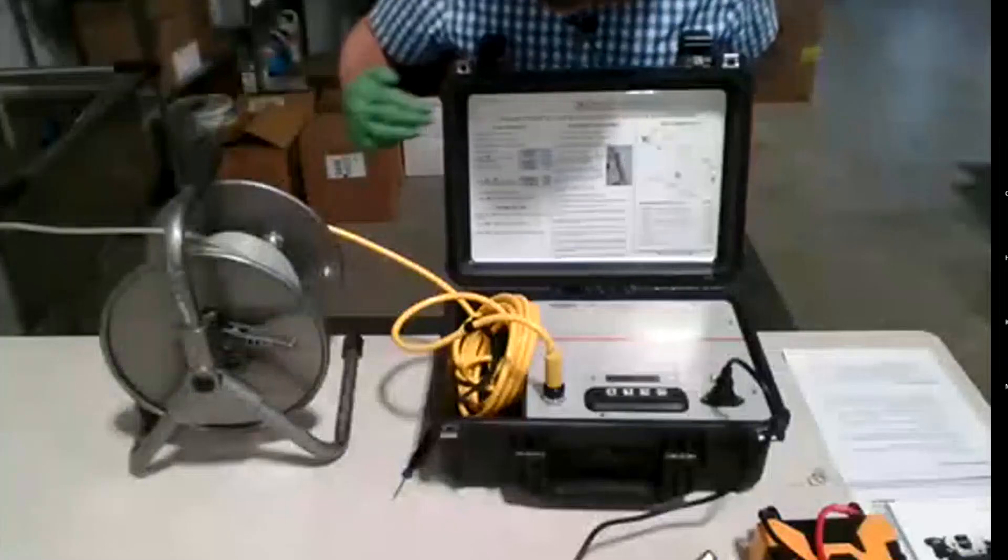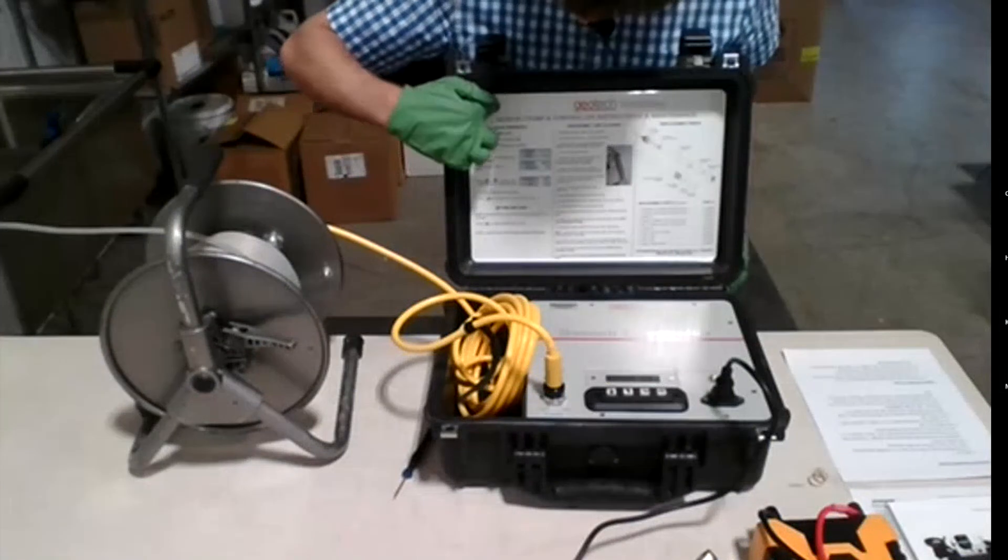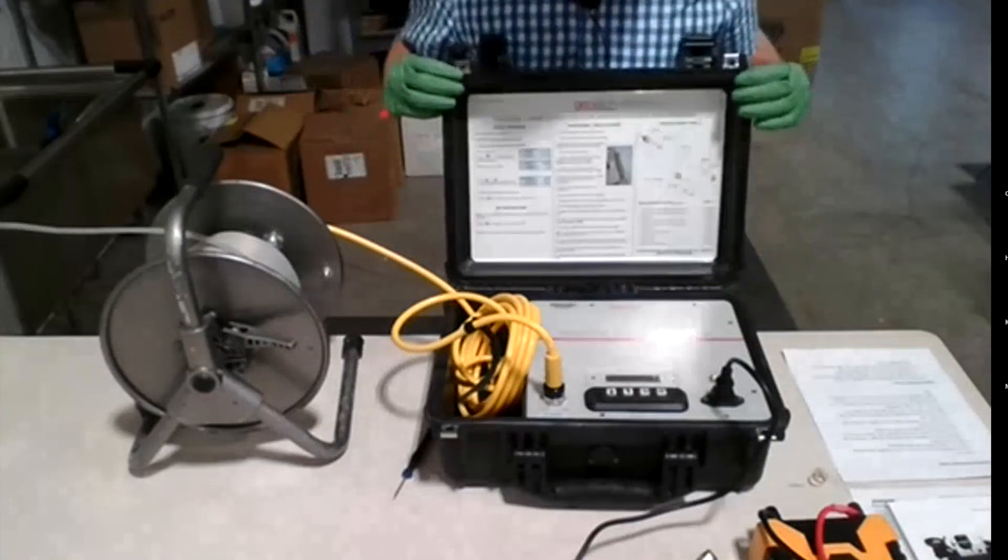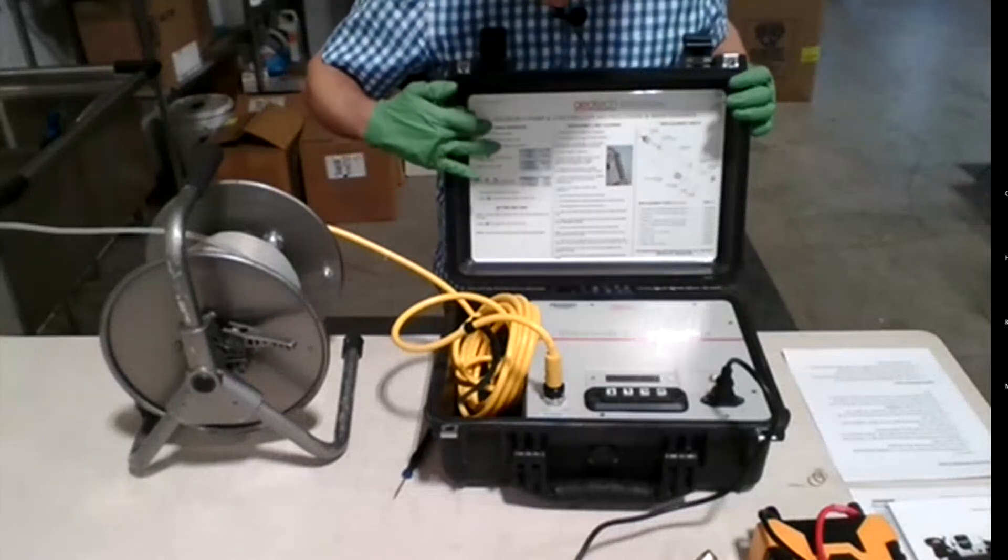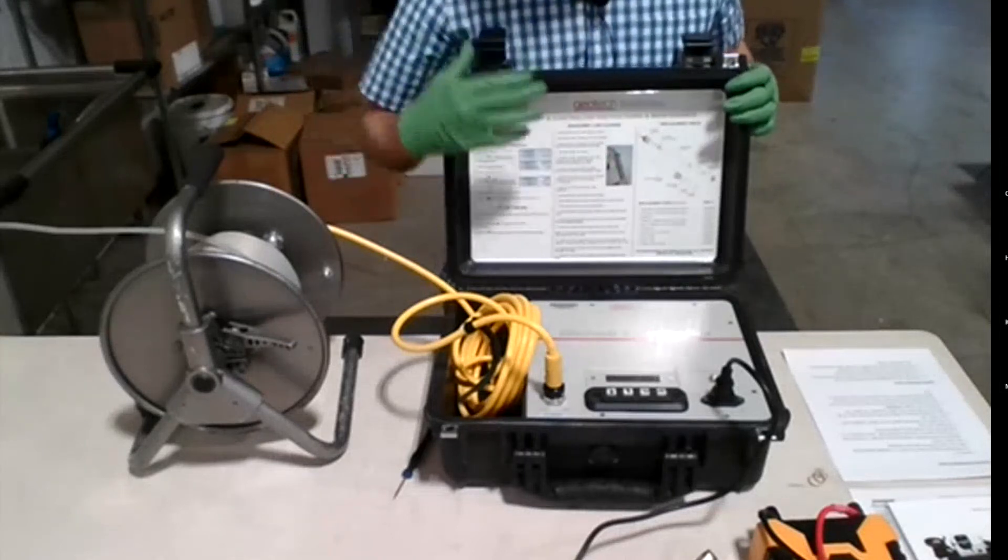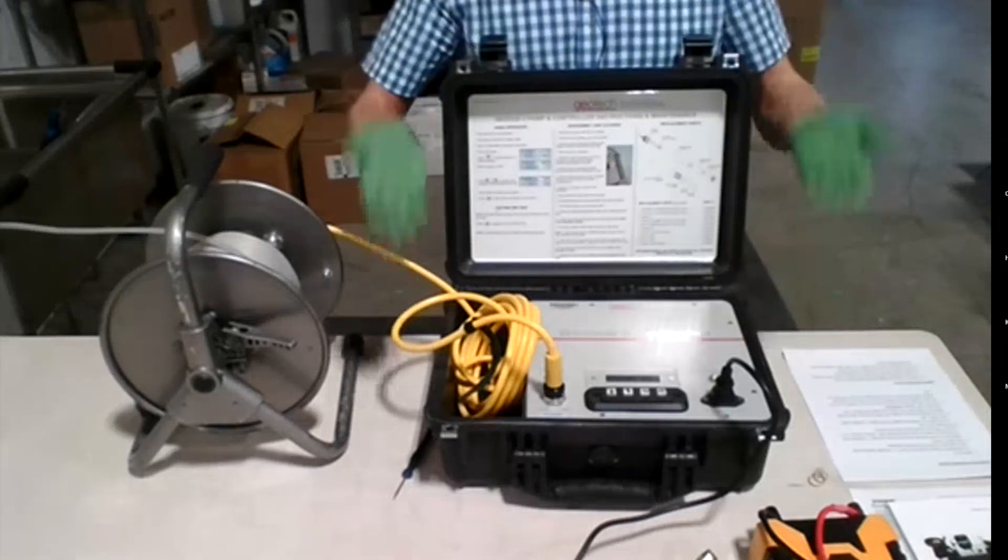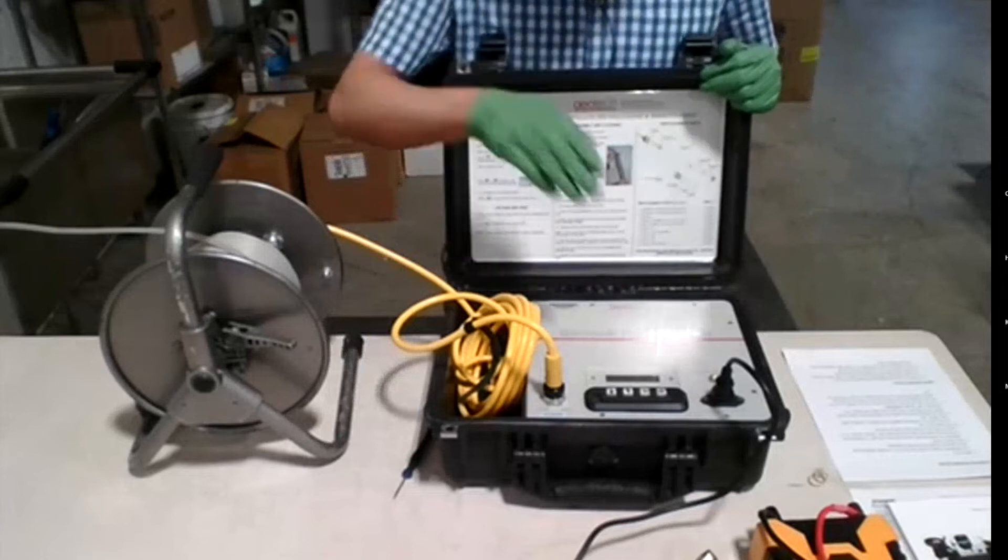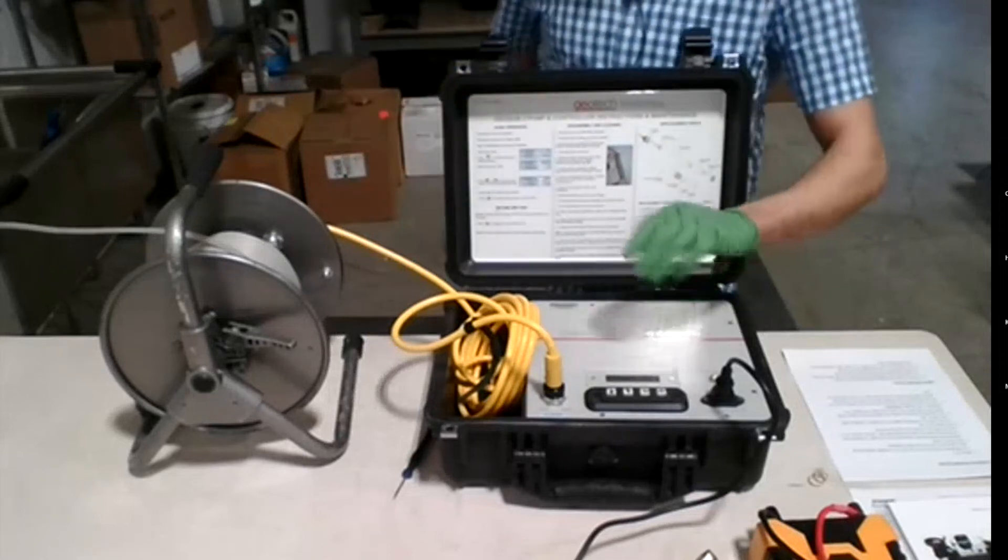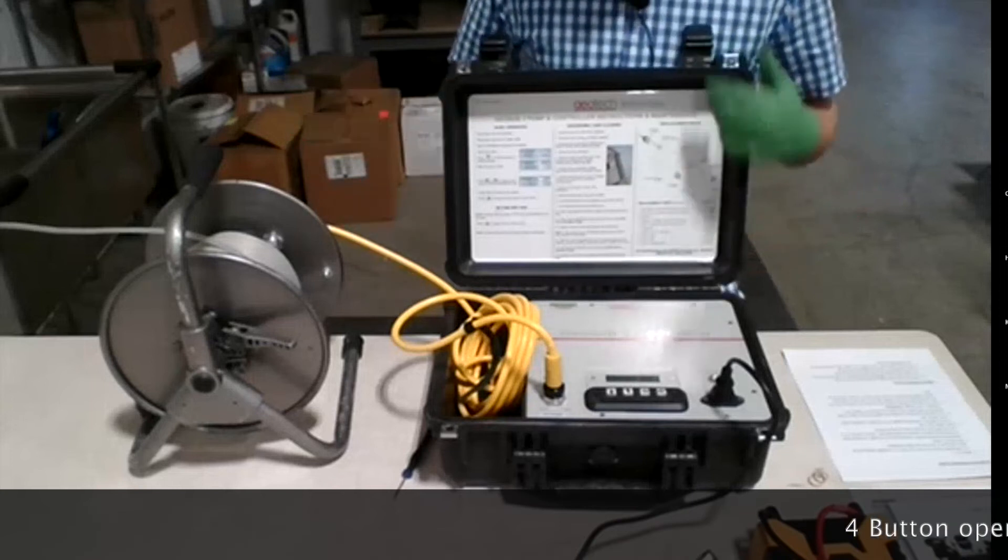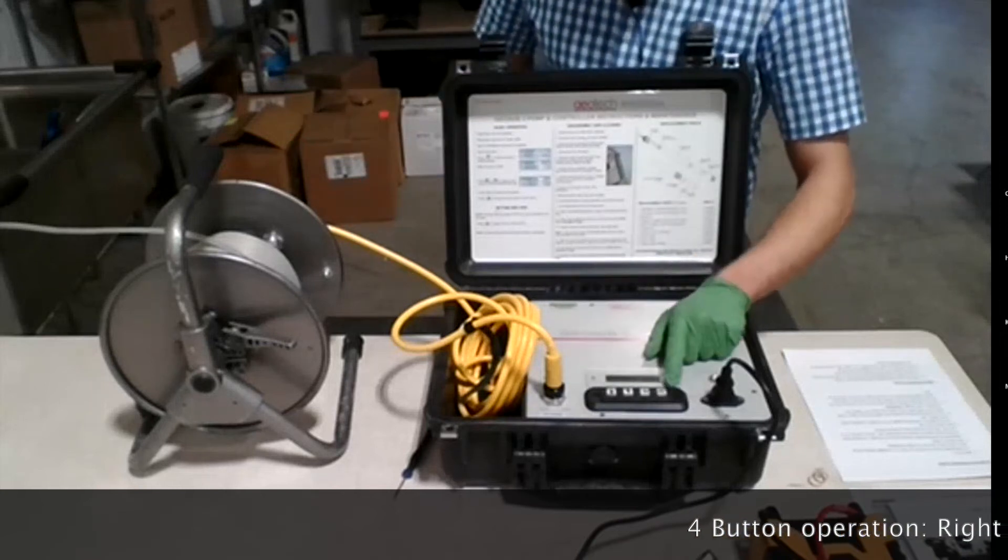The nice thing about the controller is they actually outline the most important parts on the inside of the top casing here. It literally says basic operation, assembly and cleaning. So everything that I go over today, all you have to do is open the top of the case, and find all your instructions here. On the actual controller itself, it is so easy. There are only four arrow keys, just like your keyboard. We've got up and down, left and right.